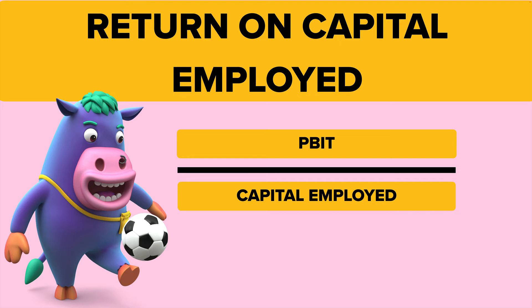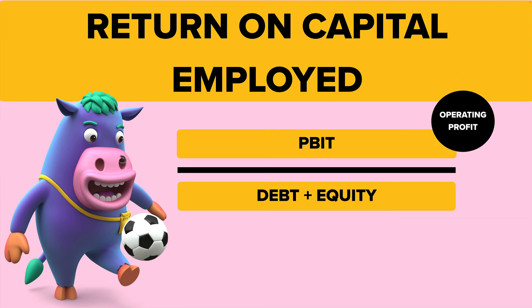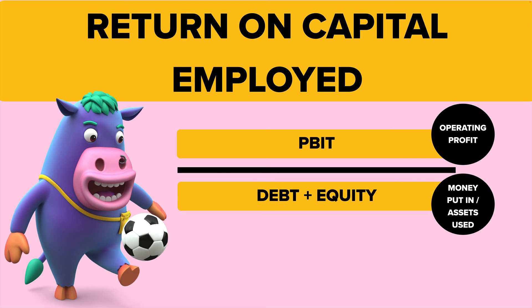And how well do you use your capital employed, which means all the money that's ever been put into the business — either because you've loaned it (debt) or you've got it from your shareholders (equity). So it's your operating profit divided by your money put in or your assets used. Sometimes it's called total assets less current liabilities, but it's easier to think of it as just debt plus equity — what people have put into the business.